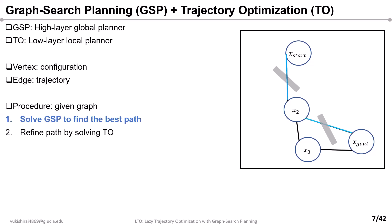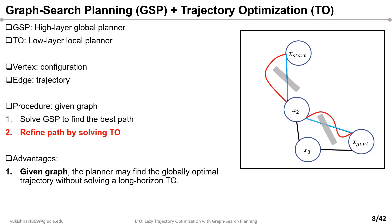In the integrated planner, GSP (graph search planner) is used to find the globally optimal path as a high-layer planner, and TO (trajectory optimization) is used to refine the path. For example, GSP finds the graph shown as the blue path, then TO is used to refine the path in the graph, shown as the red path. Therefore, as long as the graph has many vertices and edges, the integrated planner effectively solves large-scale trajectory optimization problems.